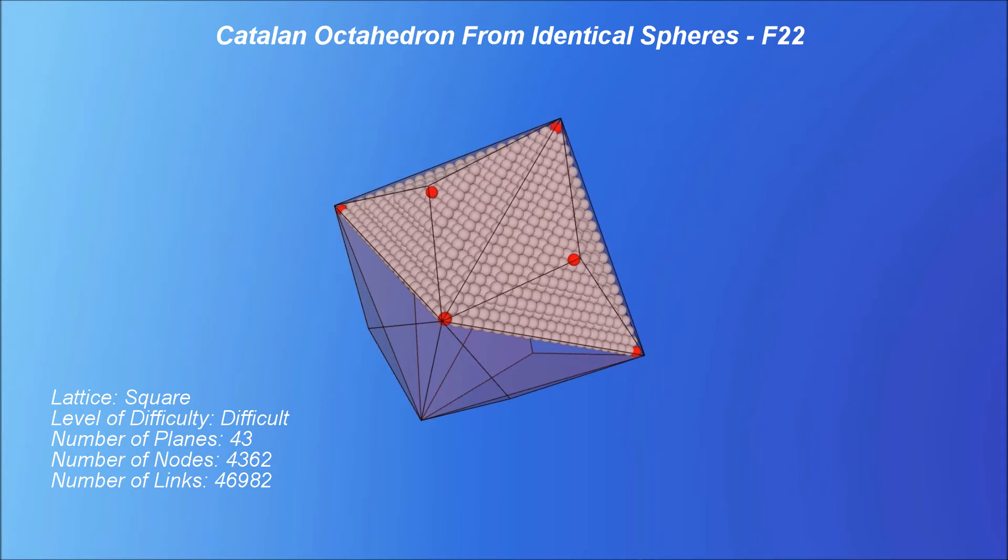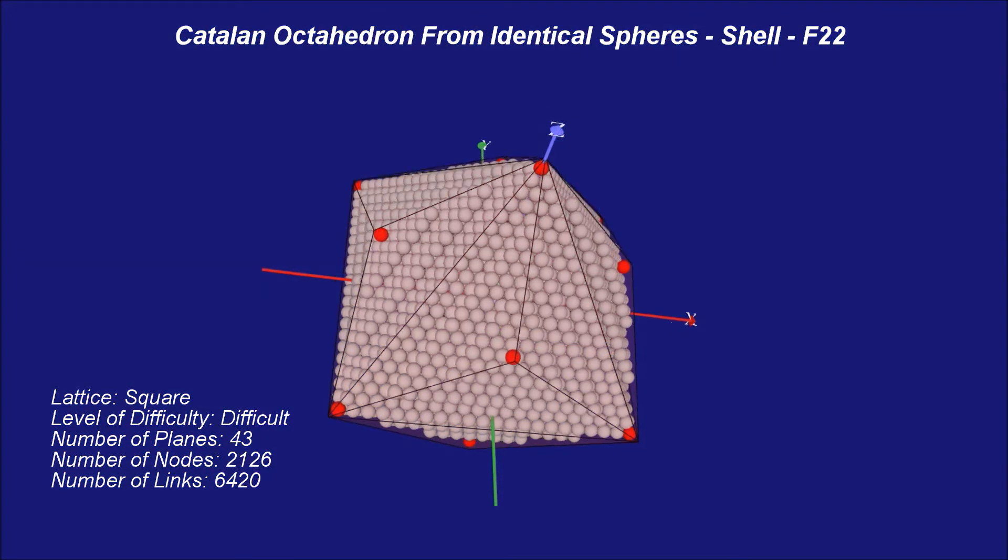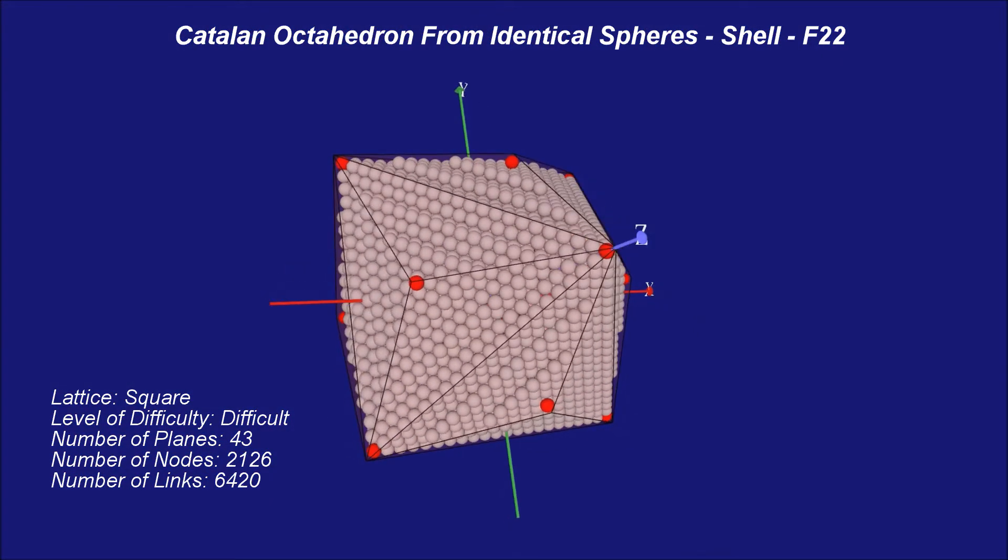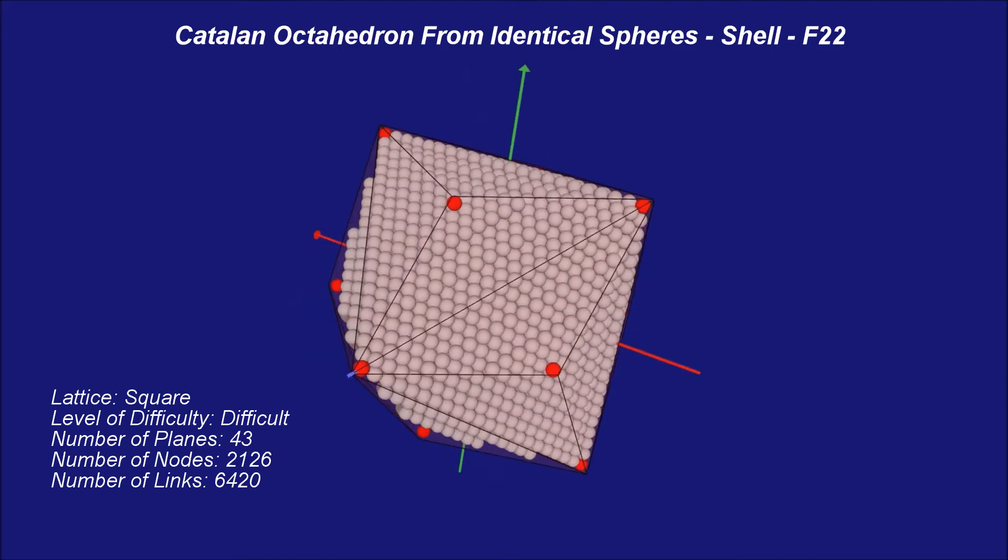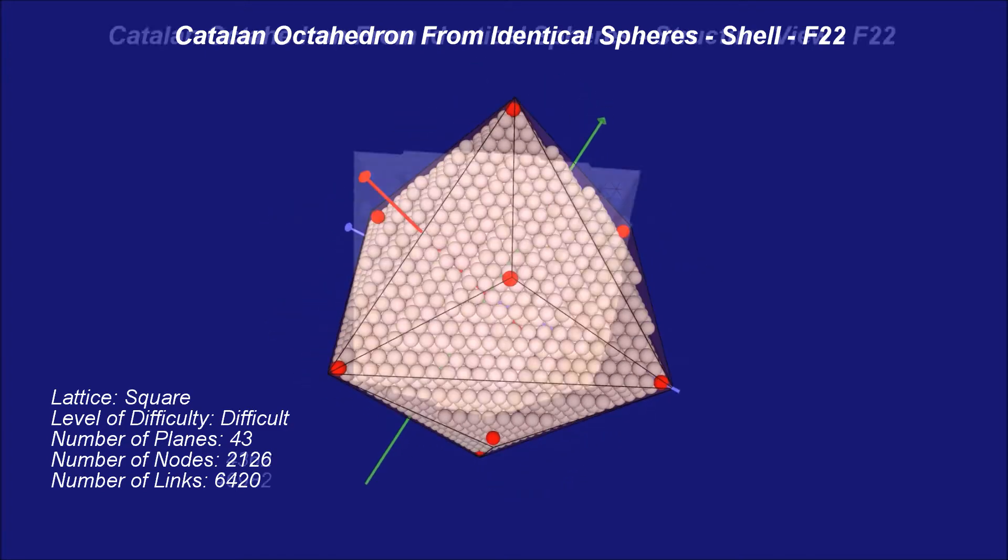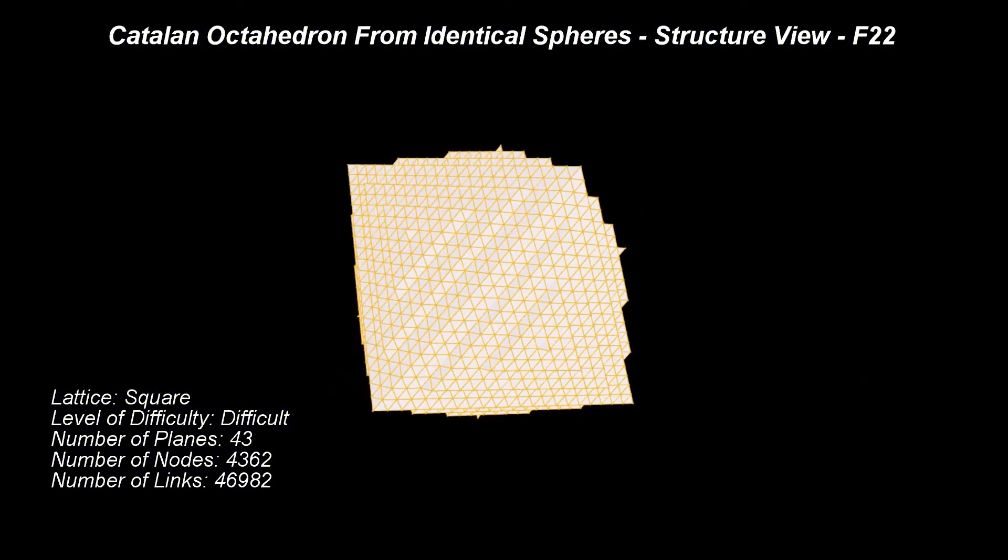Two instantiations of this pattern are shown next. First, let us look at the Catalan octahedron corresponding to the octahedron formed from triangle pattern with a size of 22 spheres.